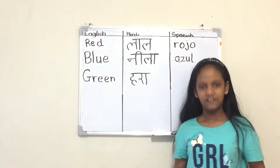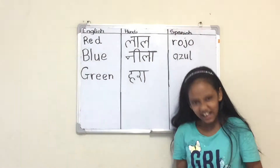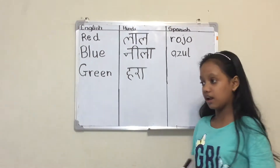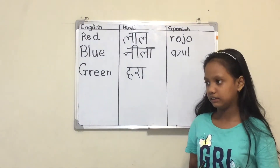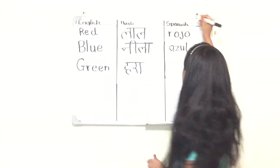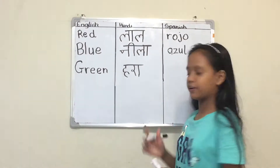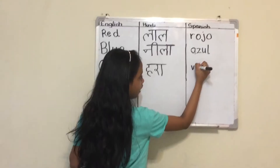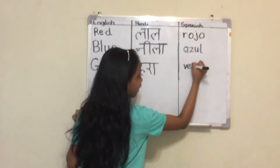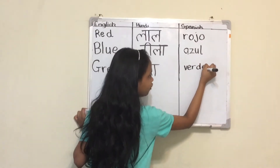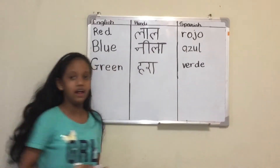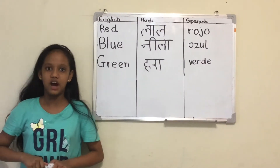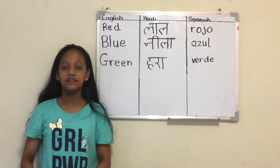Green means Hara. Hara. Drishti, can you tell me how to say Green in Spanish?